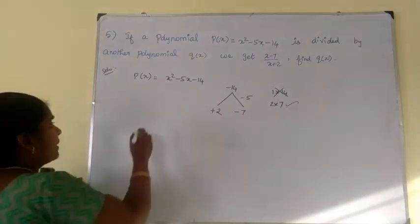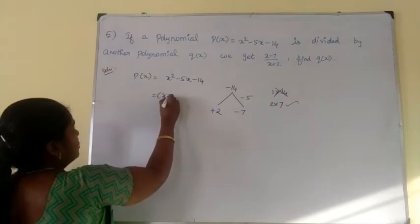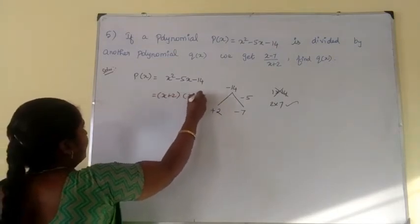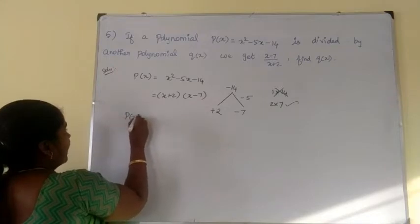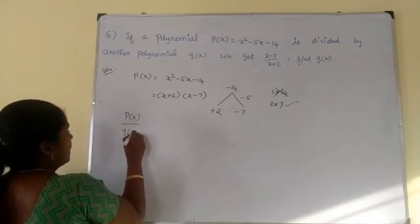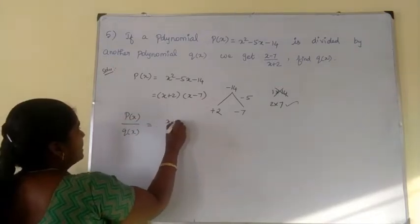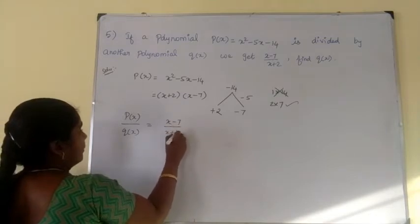The factor is x plus 2 into x minus 7. If P of x is divided by Q of x, we get x minus 7 by x plus 2.